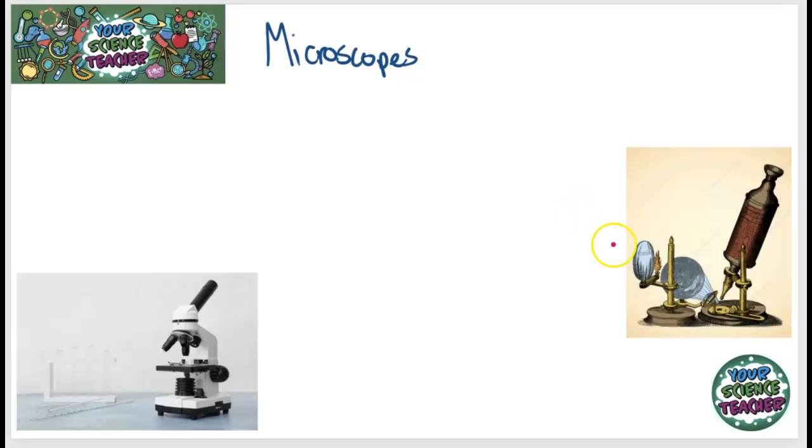Now microscopes were invented by a scientist by the name of Robert Hooke. Robert Hooke looked at a cork underneath a magnifying glass and he magnified it that much that he could start to see the cells that made up the wood. And it's now known that all organisms are made up of cells.